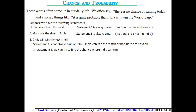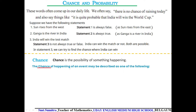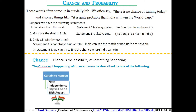Therefore, in statement three we try to find the chance of India winning. What is chance? Chance is the possibility of something happening. For example, the next Independence Day will be on 15th August — since Independence Day is always on 15th August, we call this a certain or definite event.